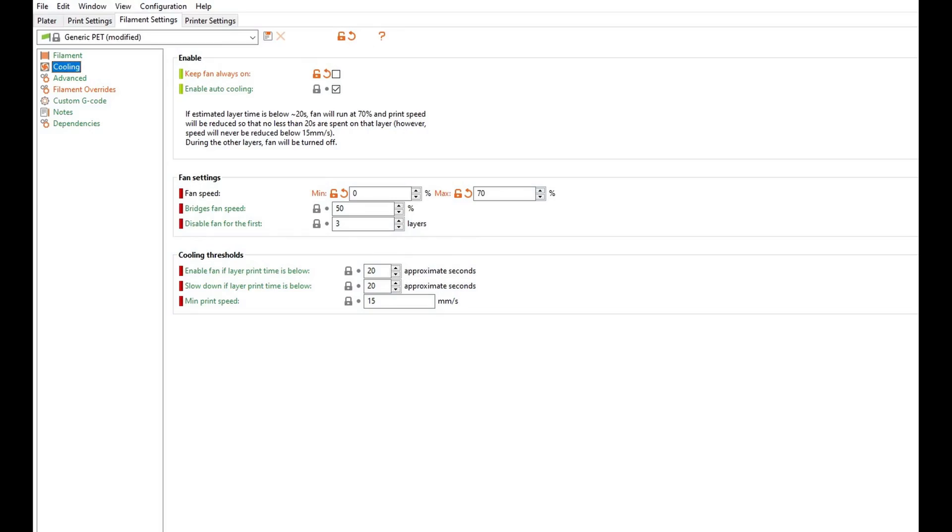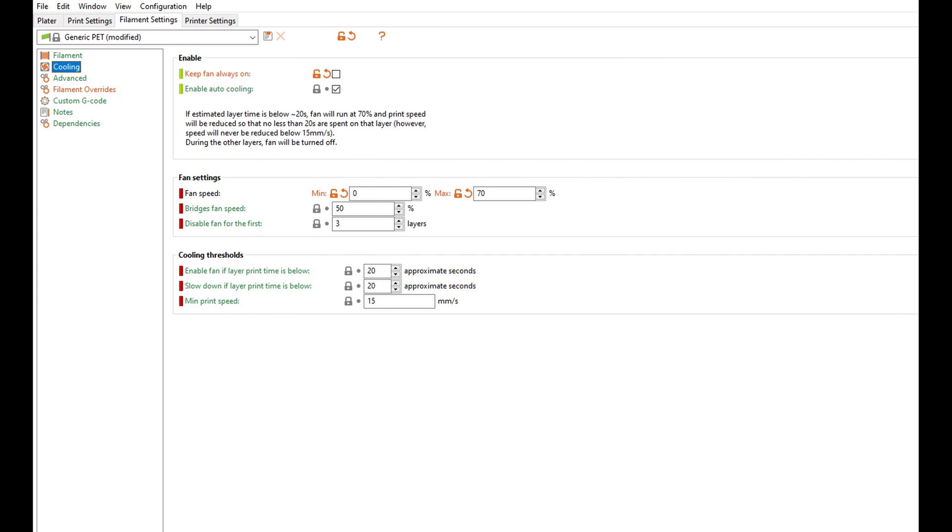For cooling I made quite a few changes that I think helped. Keep fan always on, I unchecked, so I left that off. I enabled auto cooling, which is where the system automatically changes the fan speed depending on how long a layer is going to take or if it's a bridging layer. On the fan speed settings I had this at 30% minimum and 50% maximum, but I dropped the minimum down to zero because there are some cases where you just don't need to run the fan. For bridges I put that at 50%, and then I disabled the fan for the first three layers.